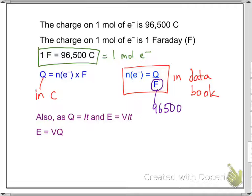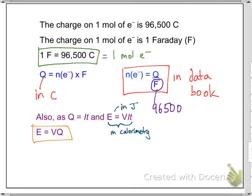Also Q equals IT and energy equals VIT. You can substitute IT for Q and get E equals VQ. You've seen energy equals VIT before in calorimetry. It is in joules. It's worth putting E equals VQ in your notes because it isn't covered in your textbook, but see over for a question that requires this one.